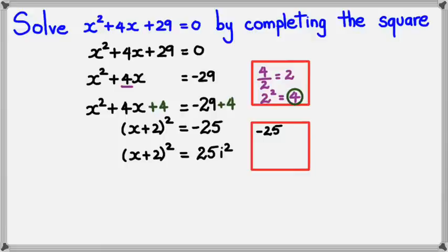We've got -25, which is the same thing as saying -1 times positive 25. Now we know that -1 = i², so therefore this is going to be 25i². Negative 25 is 25i².